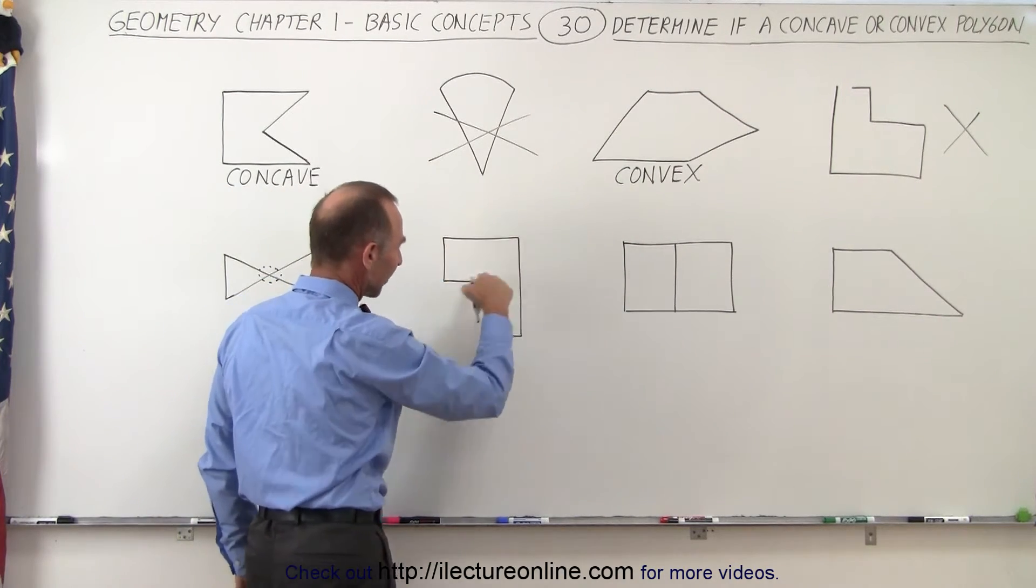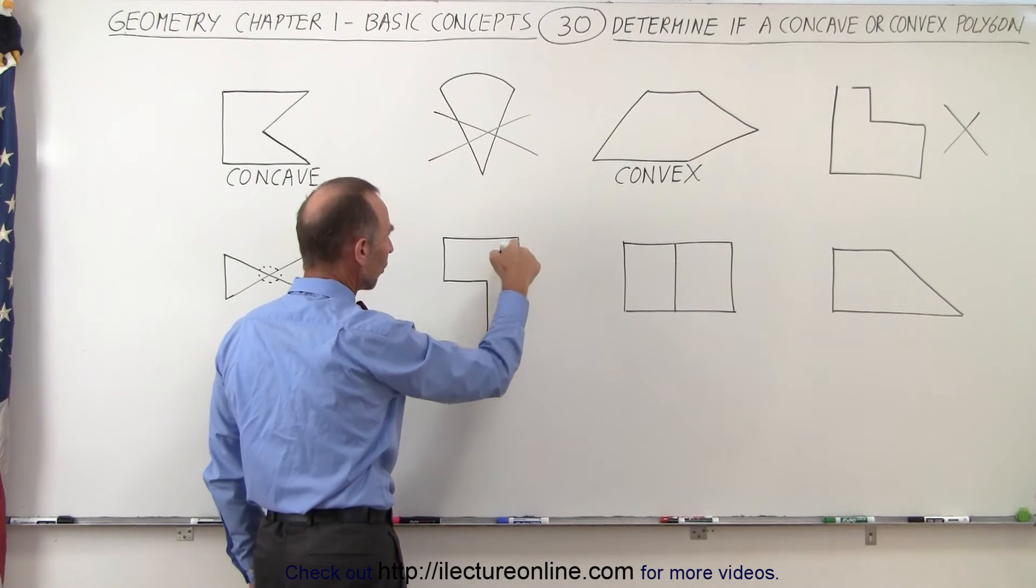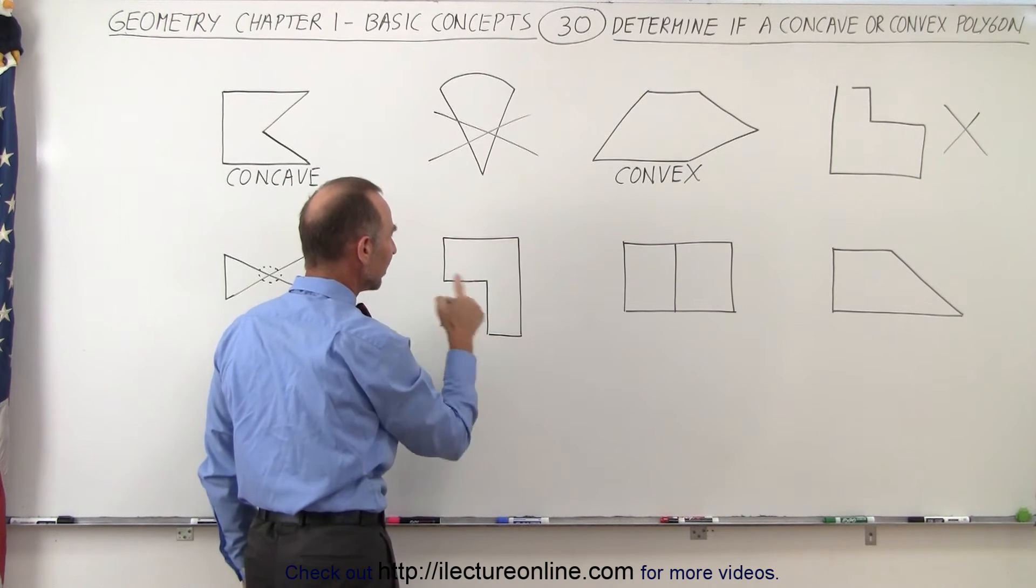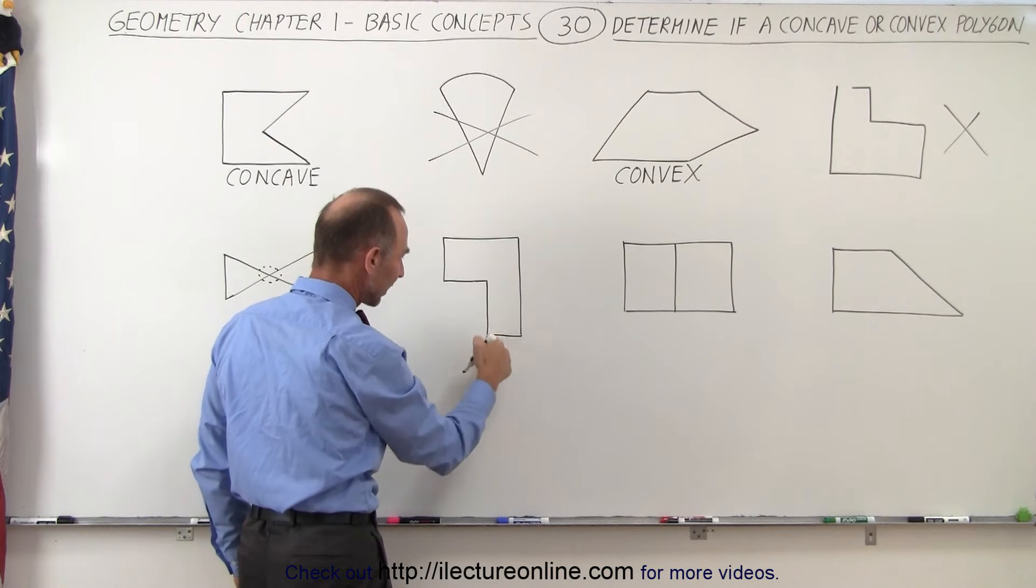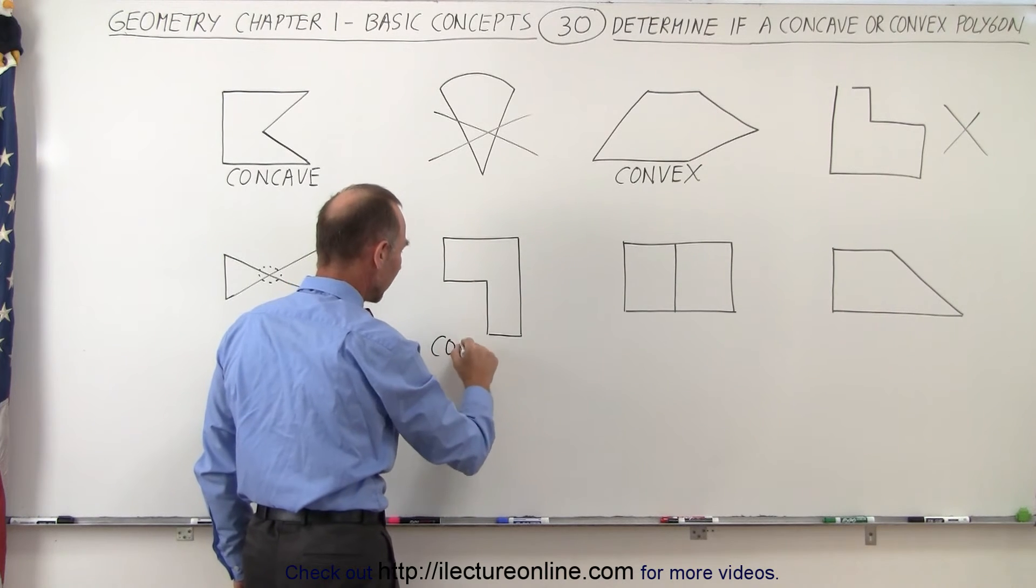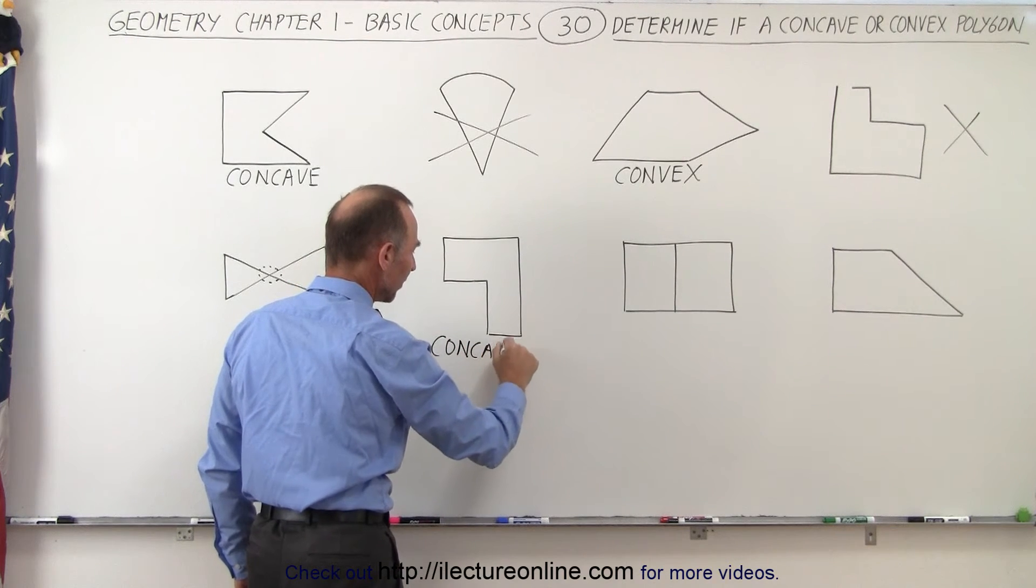Here, yes, we have nice line segments. Each line segment only connects to one other line segment on either side. There's a little cave-in right here, so we call this a concave polygon.